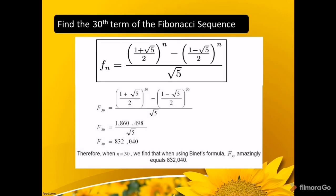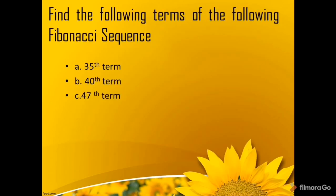Let's try Binet's formula to find the 30th term of the Fibonacci sequence. Using a scientific calculator and inputting all the numbers, the numerator comes out to 1,860,498, divided by √5, giving a final answer of 832,040. Now on your own, try to find: (a) the 35th term, (b) the 48th term, and (c) the 47th term of the Fibonacci sequence.